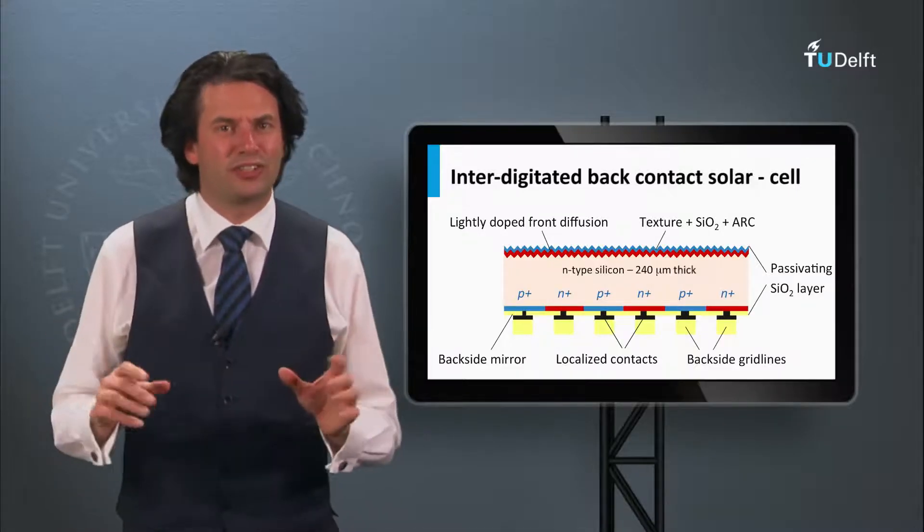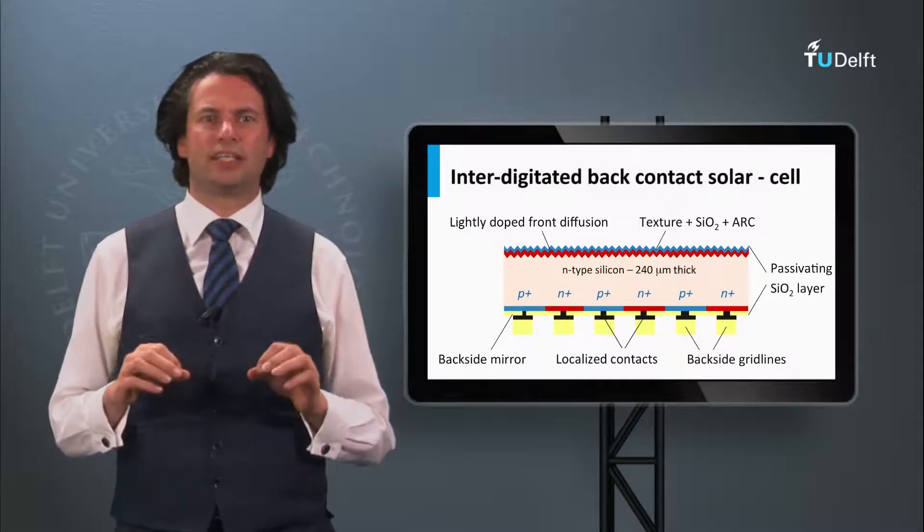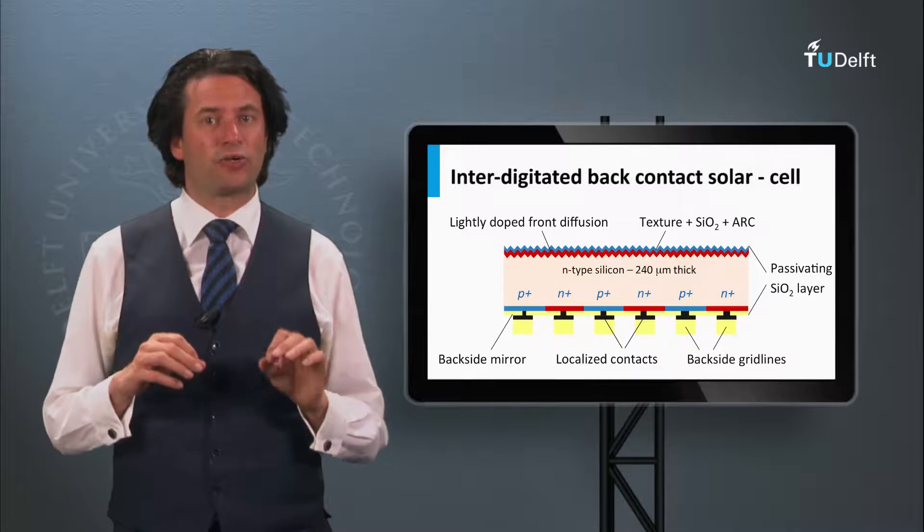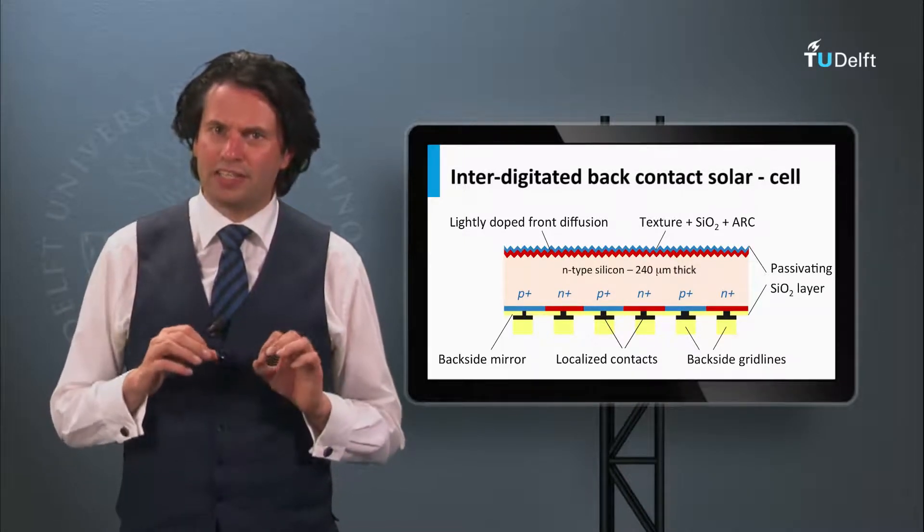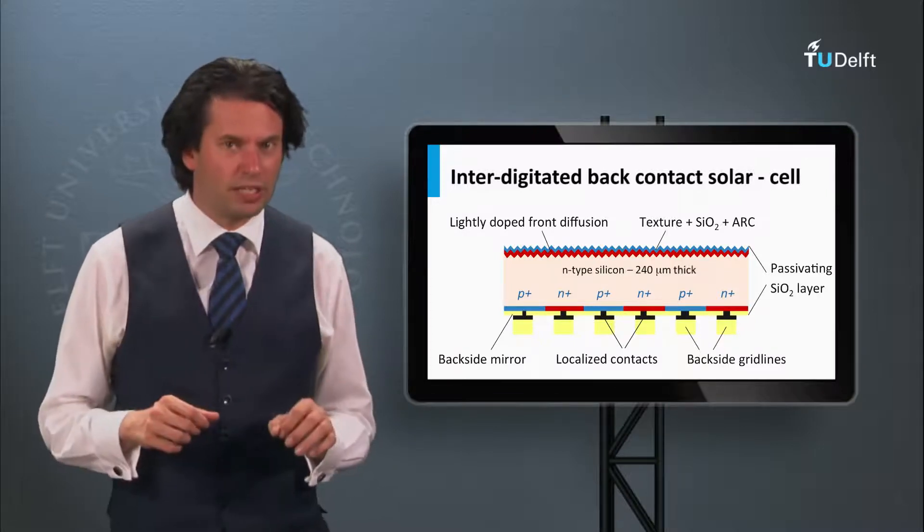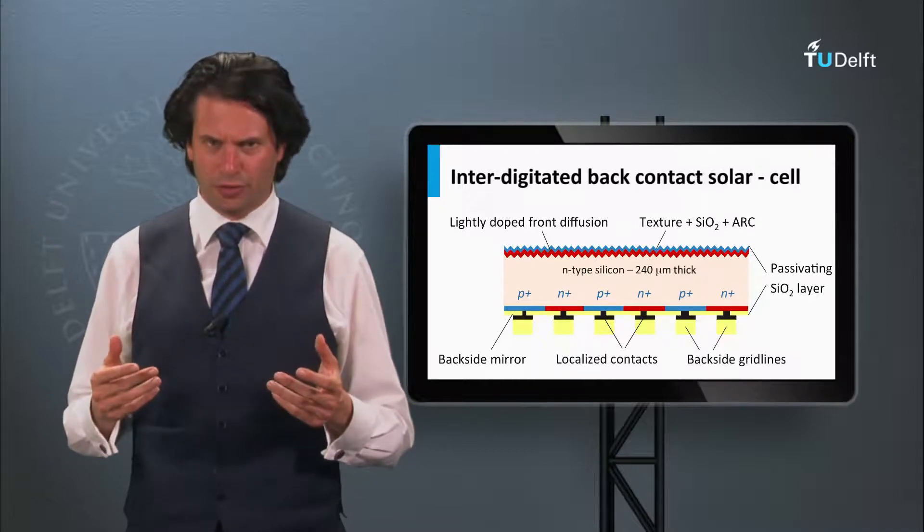A second successful cell concept, which is commercialized by SunPower, is the interdigitated back contact solar cell. The principle of interdigitated back contact concepts is that it does not suffer from shading losses of a front metal contact grid.